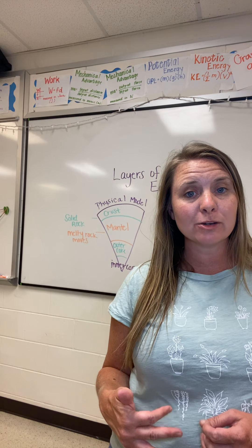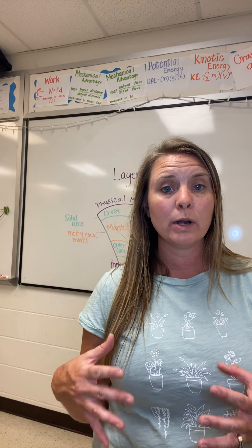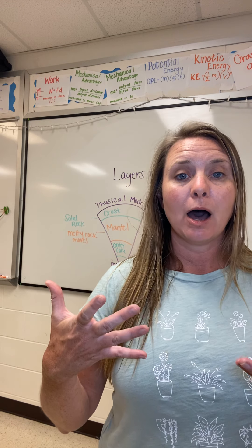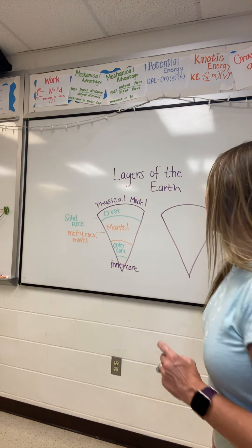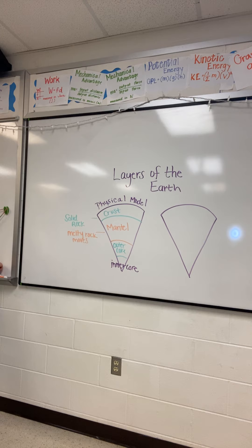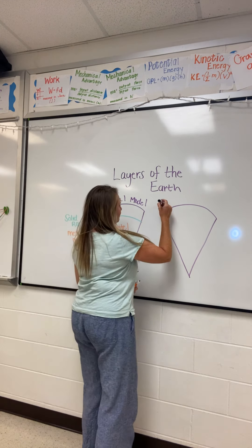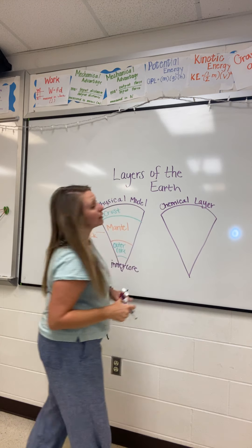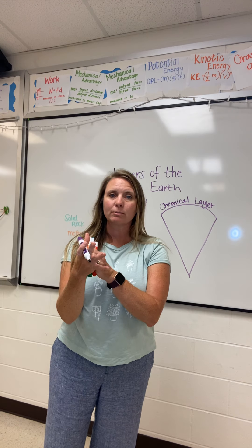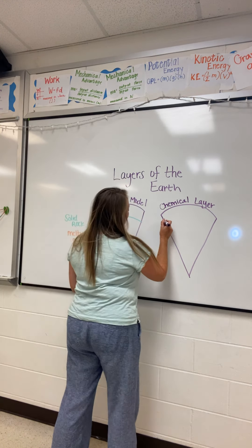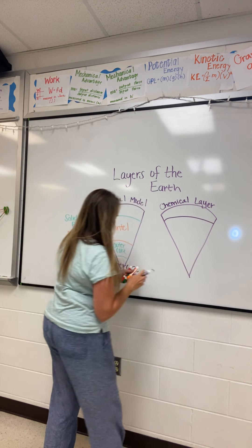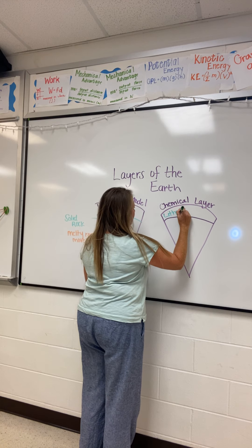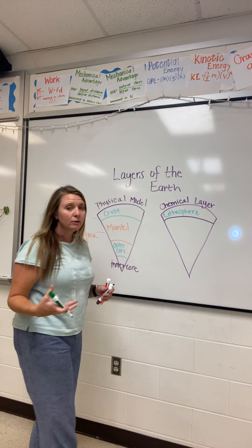I really want to focus on the chemical layers, because these are layers where we can look at what is actually happening — the chemical compositions that give each layer its distinctive properties. This one over here is going to be called our chemical layer. The uppermost region in the chemical model is called the lithosphere, and the lithosphere is solid rock, just like the crust is.